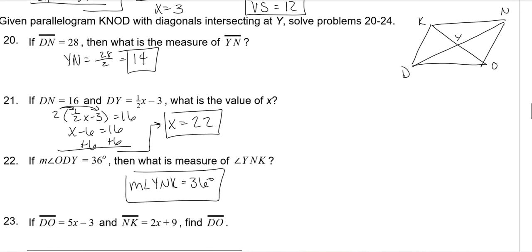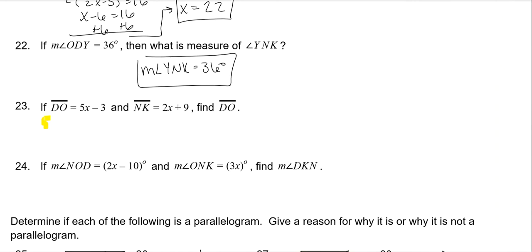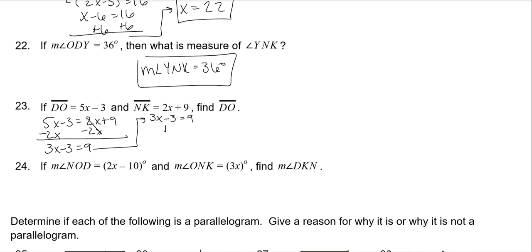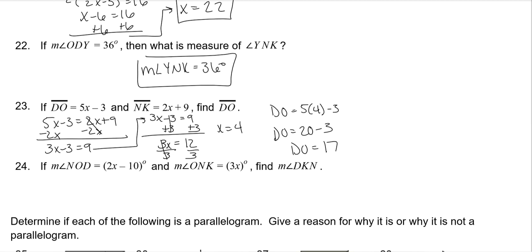DO and NK are opposite sides and are congruent. Set them equal: 5X minus 3 is equal to 2X plus 9. Subtract 2X on both sides: 3X minus 3 is equal to 9. Add 3 to both sides: 3X is equal to 12. Divide by 3: X is 4. But we need DO, so plug back in: 5 times 4 minus 3 is 20 minus 3, which is 17.